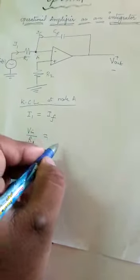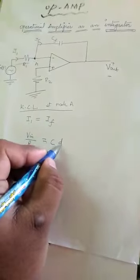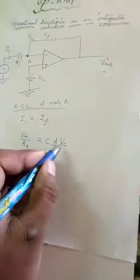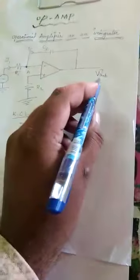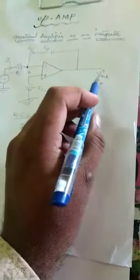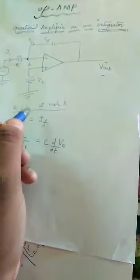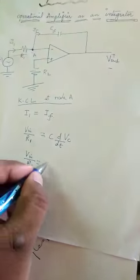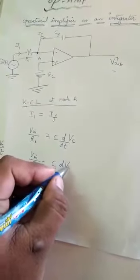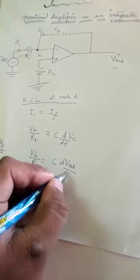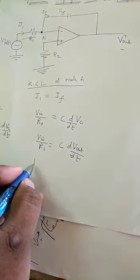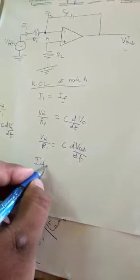VC is the voltage across the output. So we can write V in by R1 equals C times dV out by dT. To remove this differentiation we integrate on both sides.